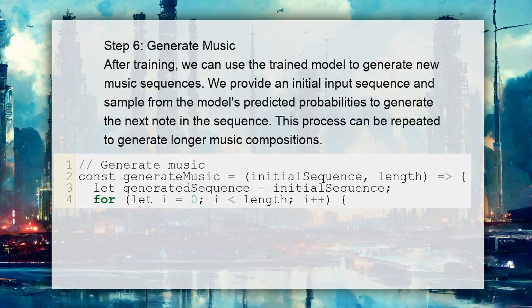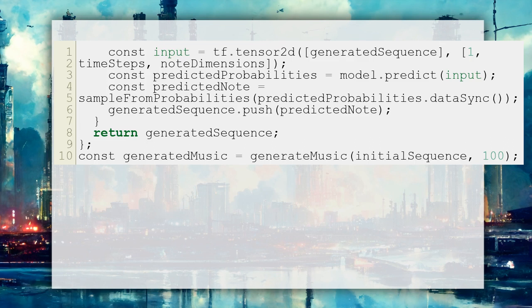Step 6: Generate music. After training, we can use the trained model to generate new music sequences. We provide an initial input sequence and sample from the model's predicted probabilities to generate the next note in the sequence. This process can be repeated to generate longer music compositions. And here is the rest of the code.